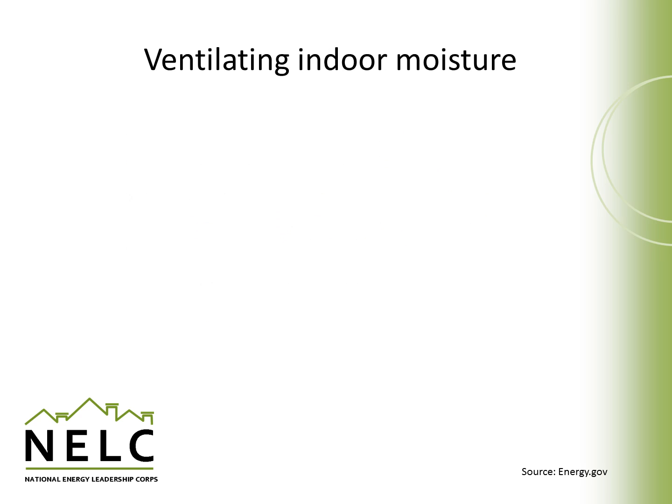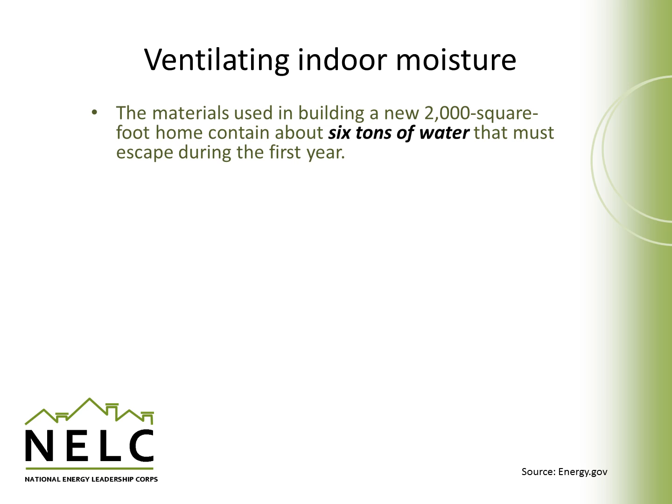Ventilating indoor moisture is another important reason to make sure there's a significant amount of ventilation in our homes. The materials used in a new building — for example, a 2,000 square foot home — can contain up to six tons of water that must escape and evaporate over the first year, particularly in the wood framing and drywall materials. If the house is too tight, it will take longer for that to evaporate and can even cause problems during early occupancy.